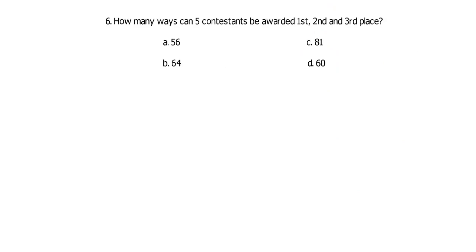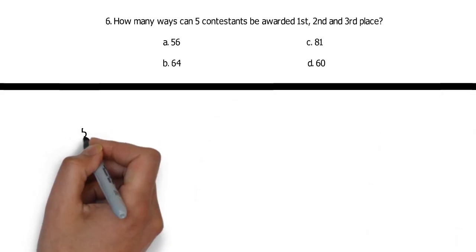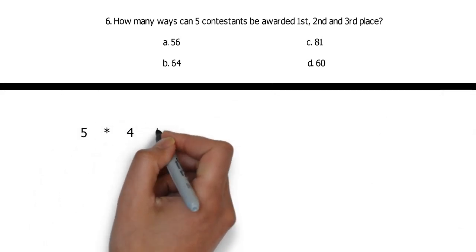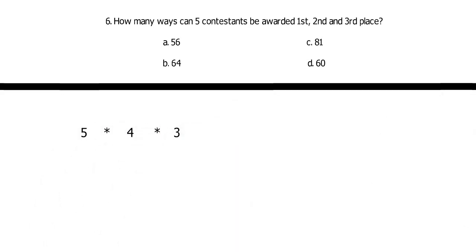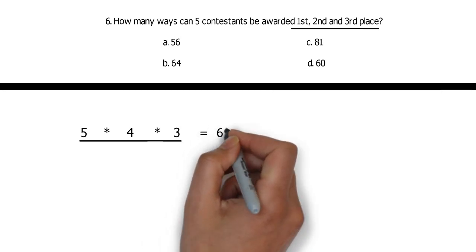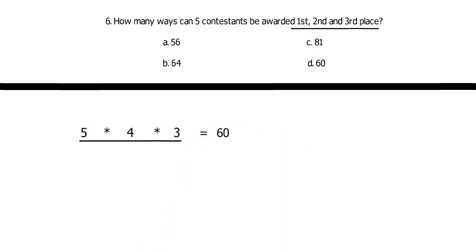In number 6, we will gonna use the same technique. But, with a twist. At first, we have 5 ways. Then, 4. Then, 3. And, we're gonna stop here. Why? Because, there are only 3 positions available for the contestants: 1st, 2nd and 3rd. So, we will gonna be ignoring the last 2 positions. So, 5 ways times 4 ways times 3 ways is equal to 60 ways. So, we have 60 possible arrangements for the 5 contestants in 3 slots.